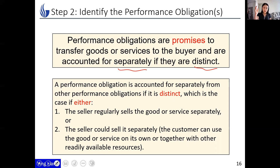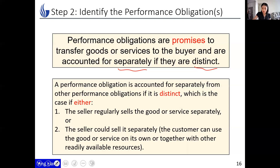For example, on Amazon I might purchase laundry detergents and also a lamp. Both detergents and lamps are sold regularly and separately on Amazon — they have separate web pages. So in that case my order consists of two performance obligations. The second situation is when the seller could sell it separately, or you can use it readily with existing readily available resources.